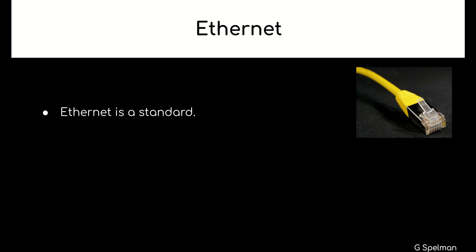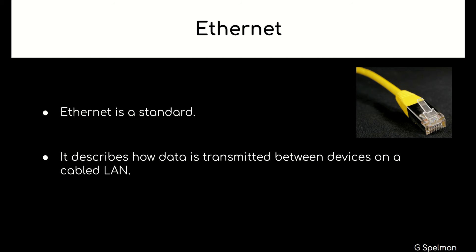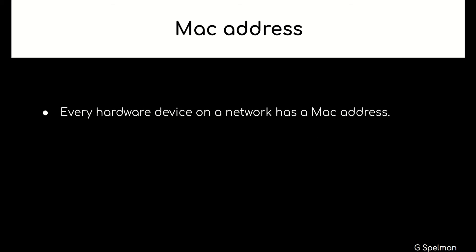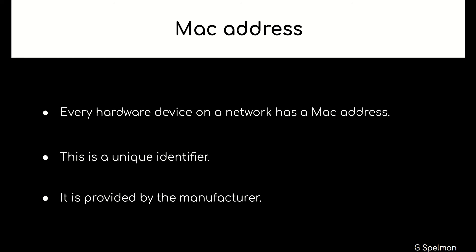Ethernet is the standard. It describes how data is transmitted between devices on a cabled LAN. MAC address: every hardware device on a network has a MAC address. IP address: this is a unique identifier provided by the manufacturer.